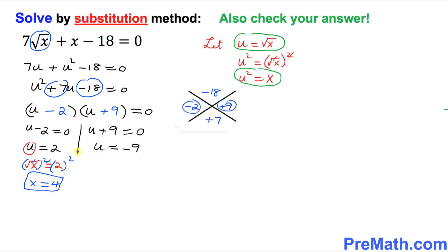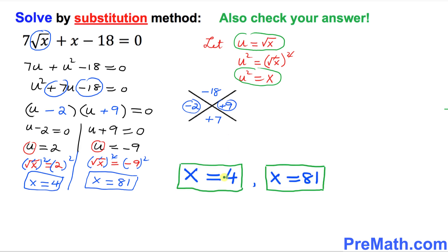And now on this side, let's take care of this one. Once again, our u is simply square root of x equals to negative 9. Let's take care of this. We take the square on both sides over here as well. Square on this side, square on this side. So we just simply got this square and square root undo each other. So we got x equals to positive 81. This is another solution. So x equal to 4 and x equal to 81 are our solutions.